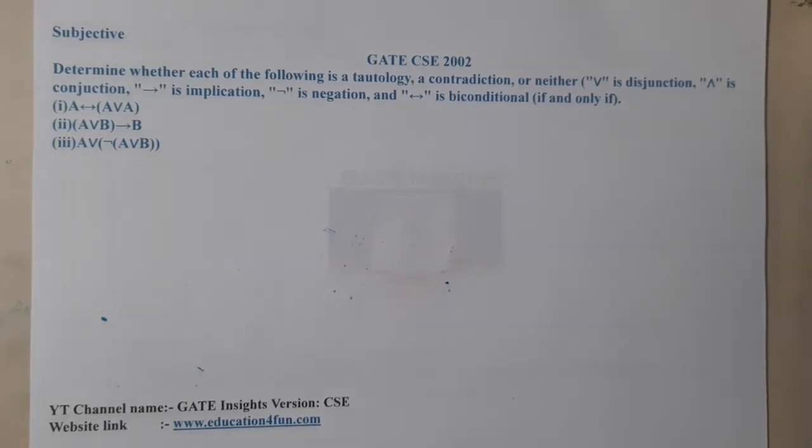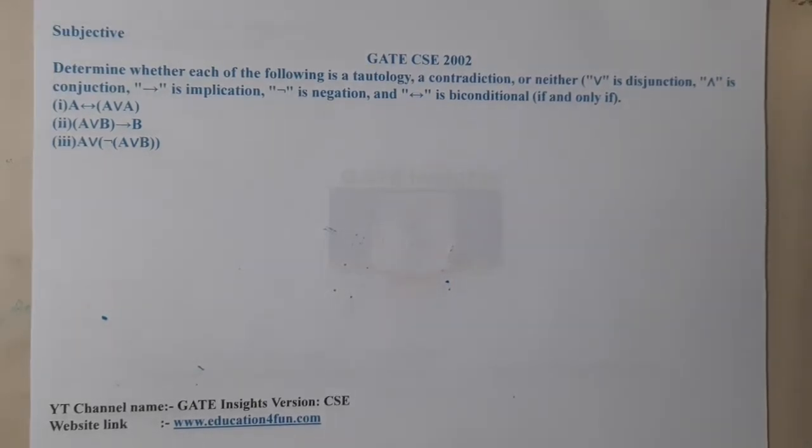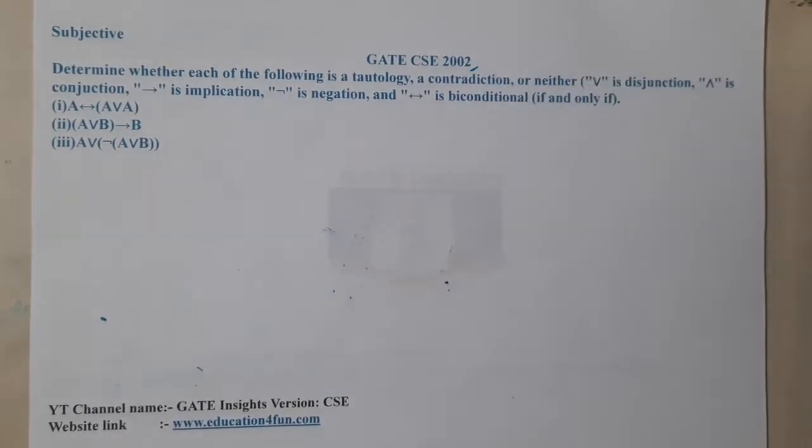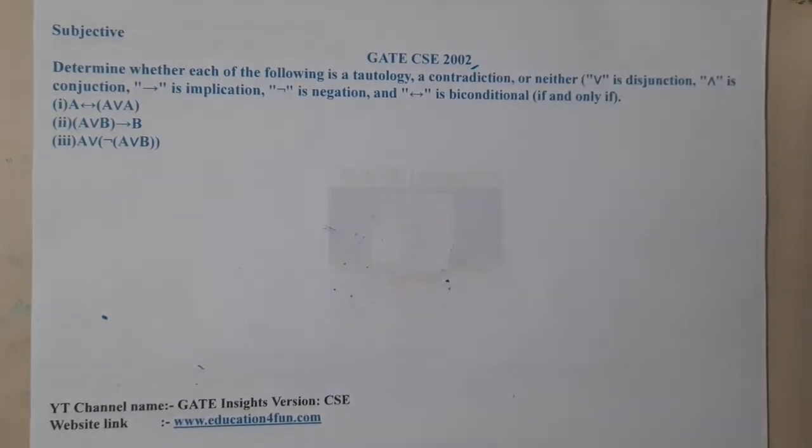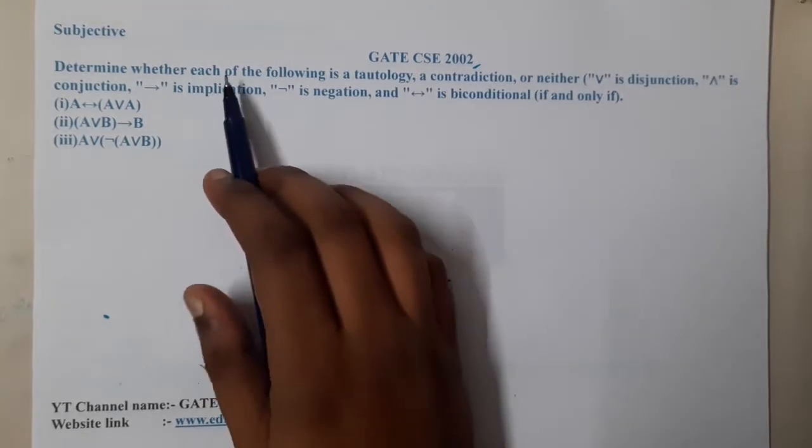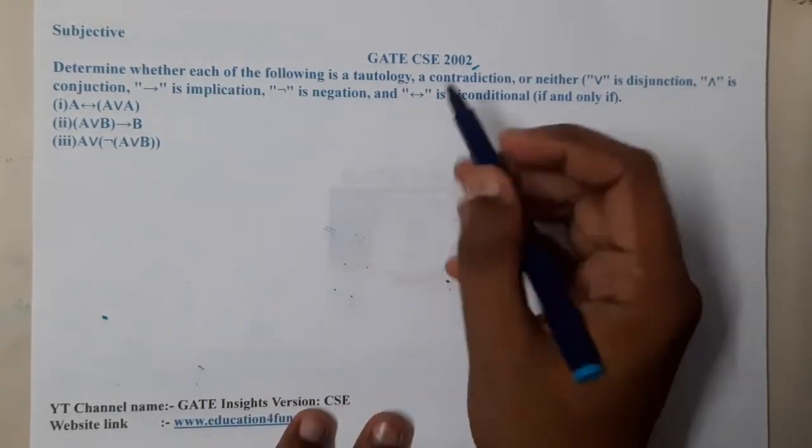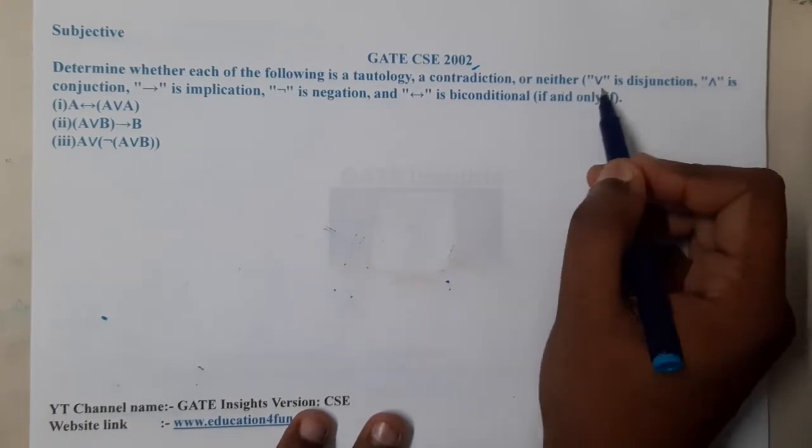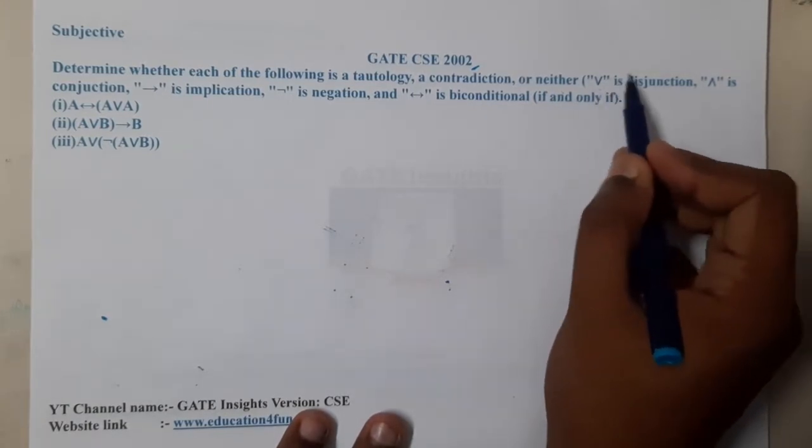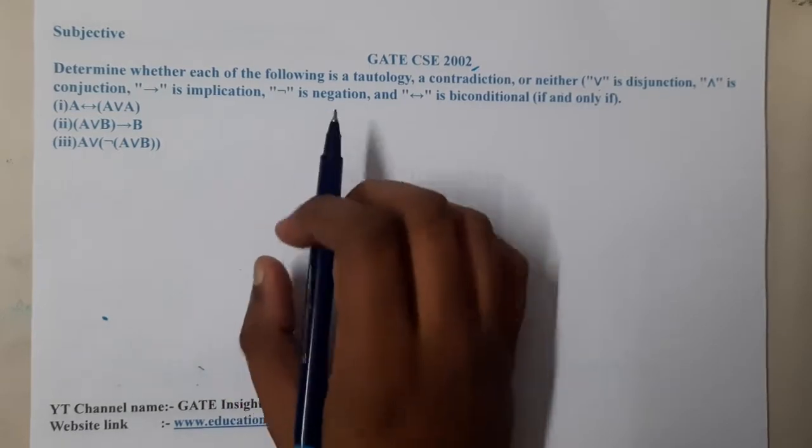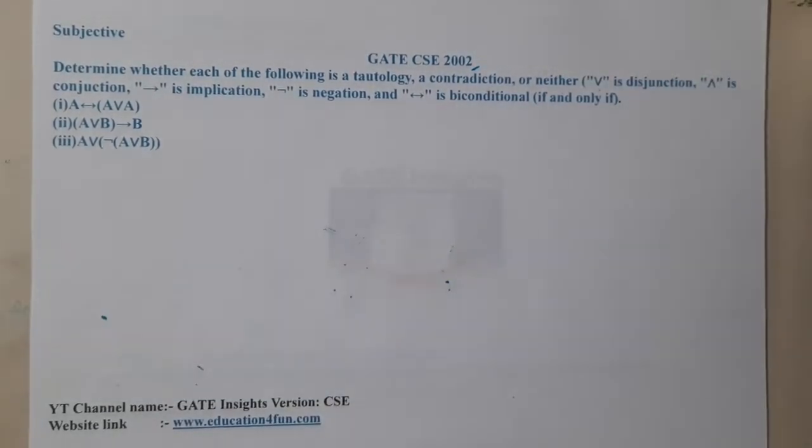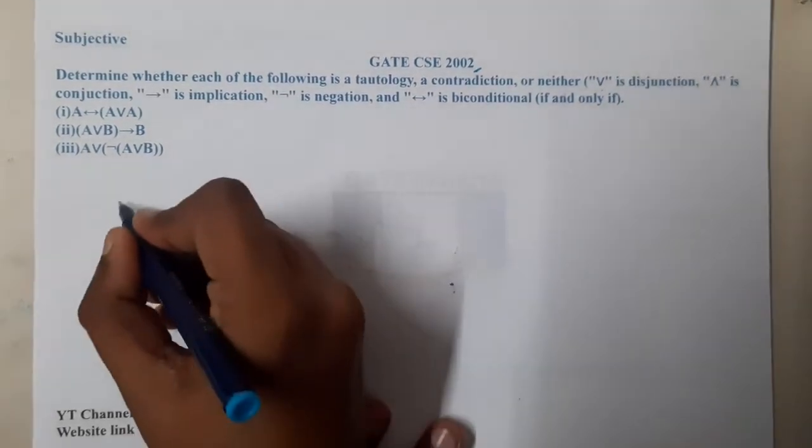Hello guys, we are back with our next lecture. In this lecture, let us go through the next question. This question belongs to GATE CSE 2002. The given question is: determine whether each of the following is a tautology, a contradiction, or neither. V is disjunction, conjunction is AND, implication, negation, and biconditional. Now they are asking us to solve this particular question. Let us start.